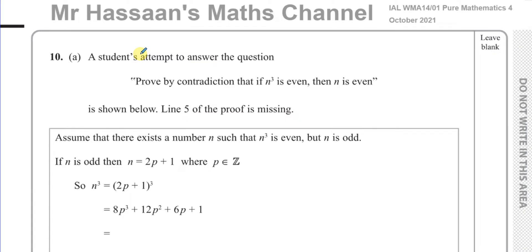To prove by contradiction, we first make an assumption that something opposite to this is true — something that contradicts it. So we have to assume, as the student has, that there exists a number n such that n cubed is even, but n itself is odd. That you've taken an odd number, cubed it, and got an even number. We've got to show that this statement we've made — which contradicts what we're trying to prove — will lead us to something which does not make sense.